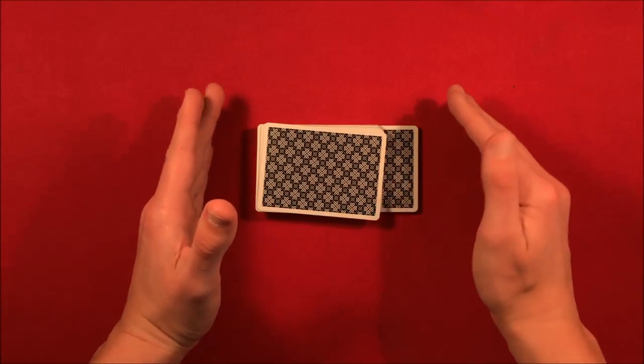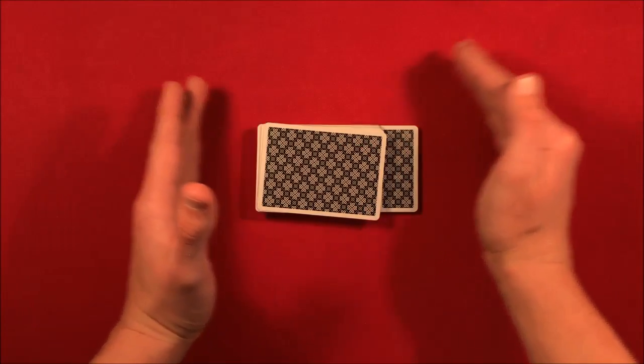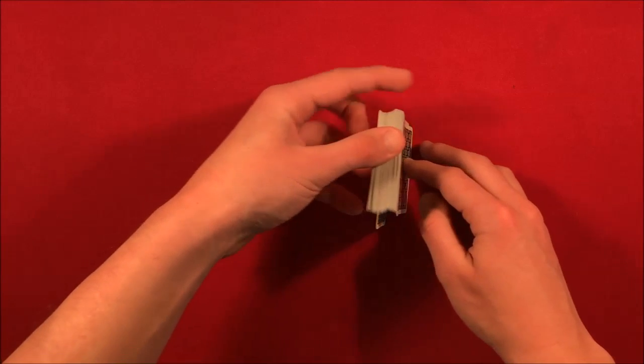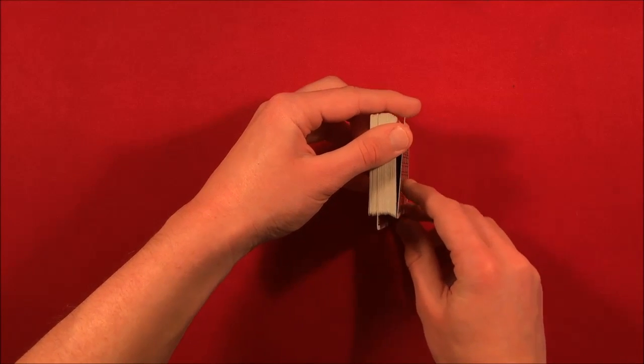So my left hand is going in, my right hand is coming at an angle, and what happens is that card is now going to shoot an out-jog in the bottom just like that.